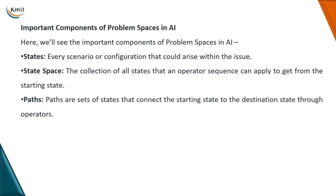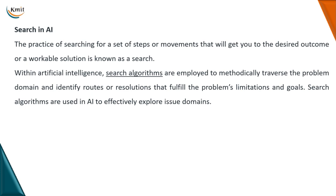A state is the configuration that could arise within an issue — for every scenario, we have an issue associated with it, and that is called a state. State space is the collection of all these states depending upon the operation sequence that happens. Paths are the set of states that connect from one state to another, throughout the initial state to the destination. So states are simple nodes, state space is the collection of all these states, and paths connect the starting state to the destination state.